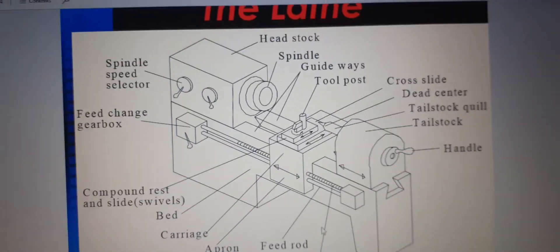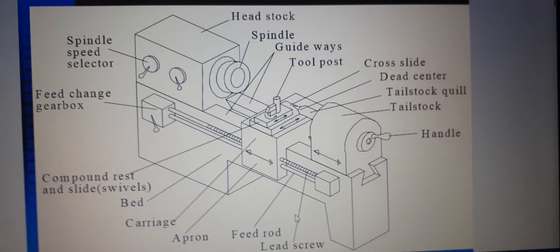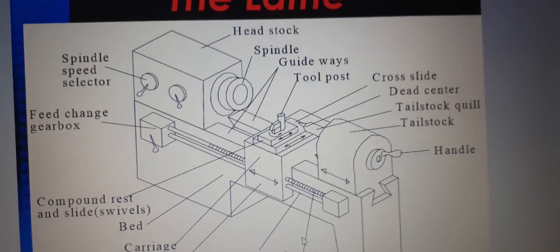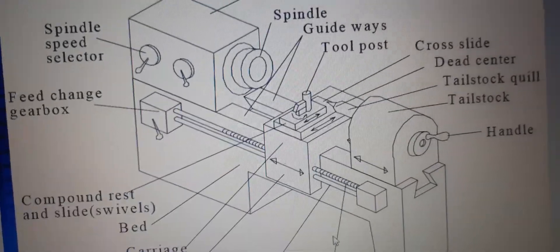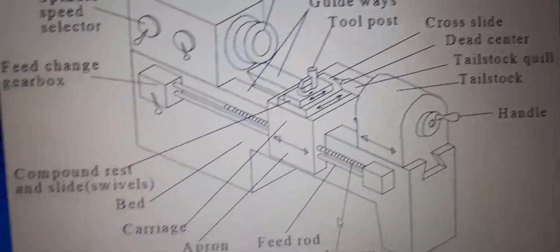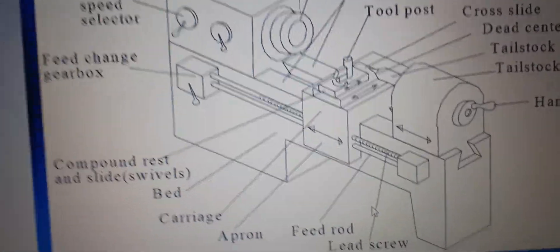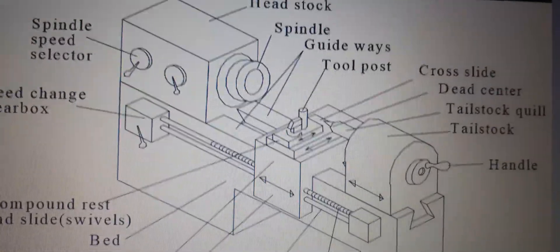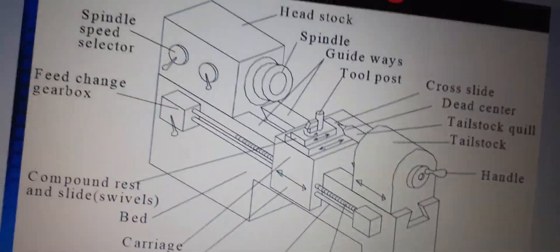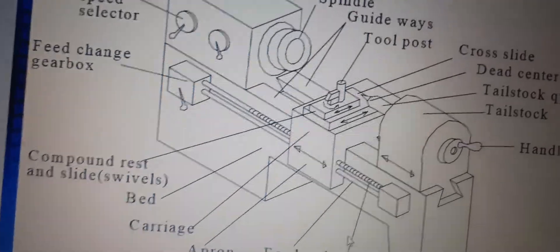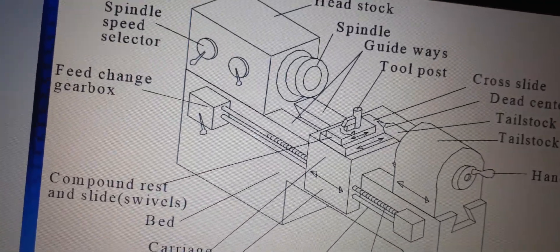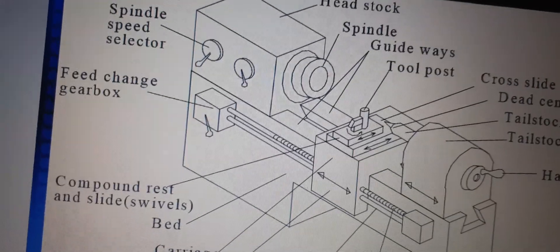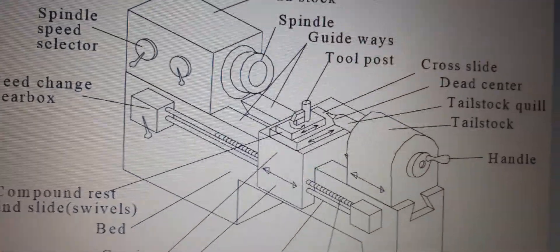You are all seeing the figure of a lathe. What is a lathe? A lathe is a machine which removes metal from the workpiece to the required shape and size. It removes excess material in the form of chips by rotating the workpiece against a stationary cutting tool.